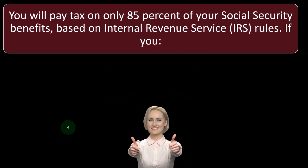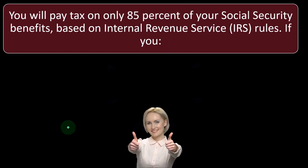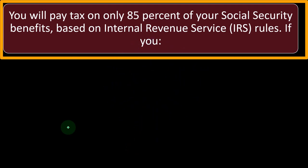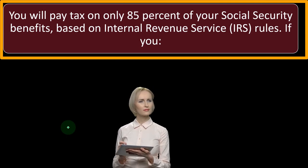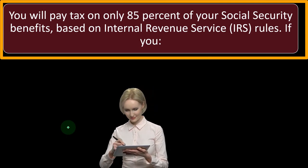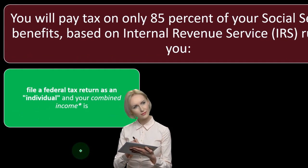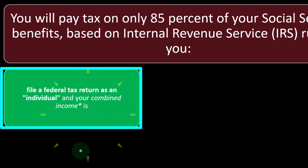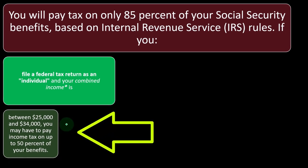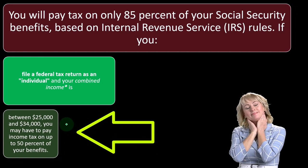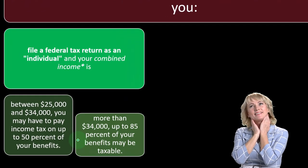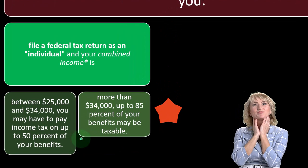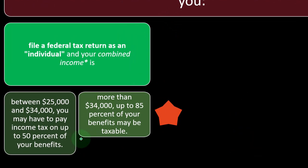Per IRS rules from the Social Security website: if you file as an individual and your combined income is between $25,000 and $34,000, you may have to pay income tax on up to 50% of your benefits. If your income is more than $34,000, up to 85% of your benefits may be taxable.